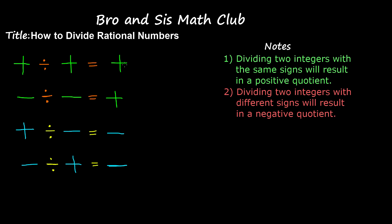So when you divide two integers with the same signs, you will result in a positive quotient. For example, if you divide a positive by a positive, you will get a positive quotient. And if you divide a negative by a negative, you'll also get a positive quotient.